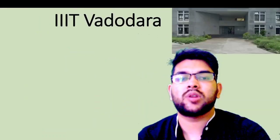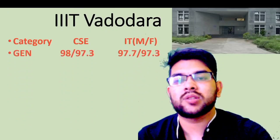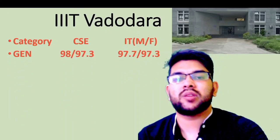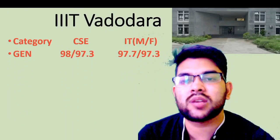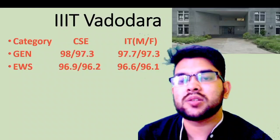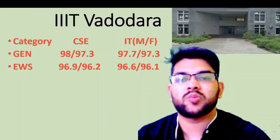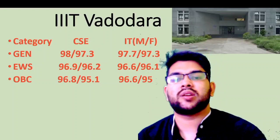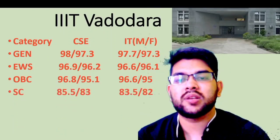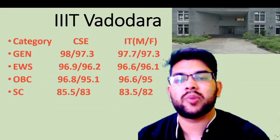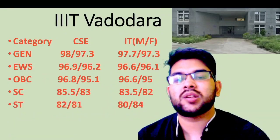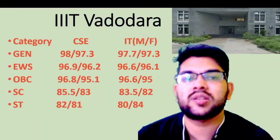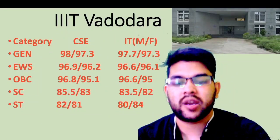For IIIT Baroda: General — CS male 98, female 97.3; for IT check sidewise. EWS — male 96.9, female 96.2. OBC — male 96.8, female 95.1. SC — male 85, female 85.5. ST — CS male 82, female 81. For IT branch, you can check sidewise.